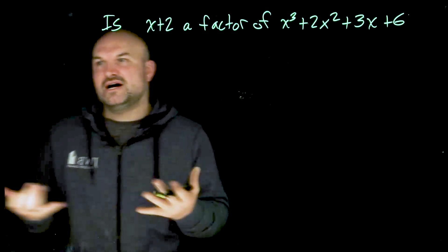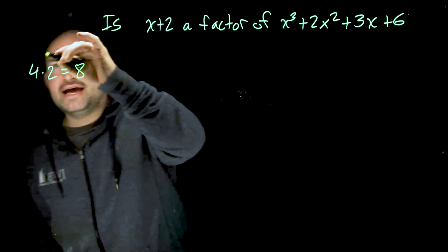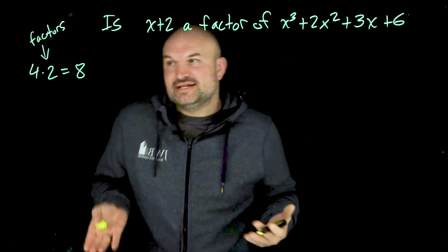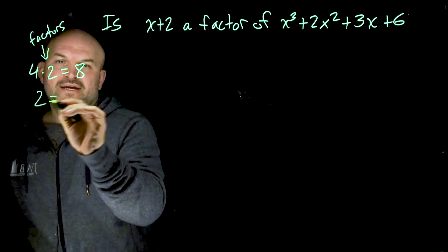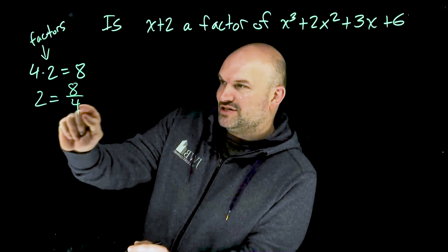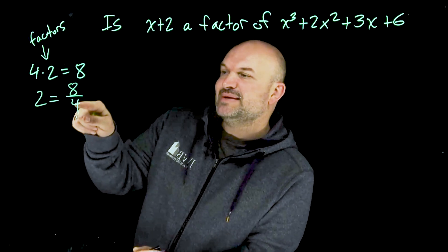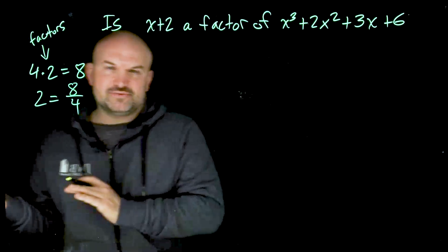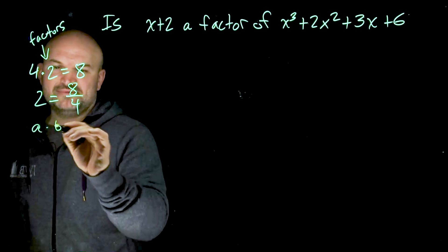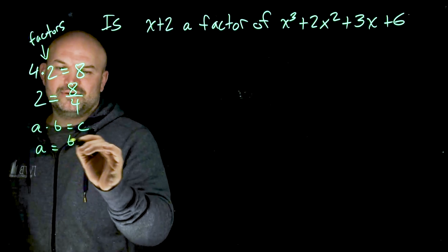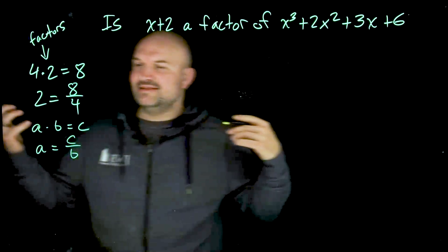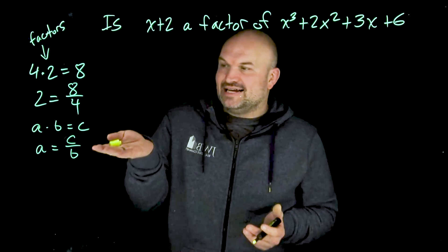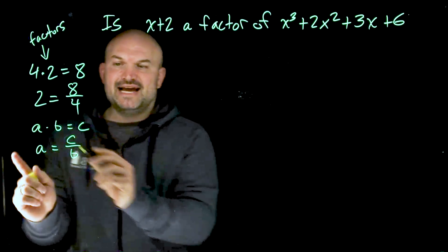My favorite example is 4 times 2 equals 8. So 4 and 2 are factors of 8 because 4 times 2 equals 8. We can also rewrite this as 8 divided by 4 equals 2, since 4 is a factor and it evenly divides into 8 two times. In terms of variables: a times b equals c, so a equals c divided by b. Our factors evenly divide into our value, and our two factors multiplied together give us that value.